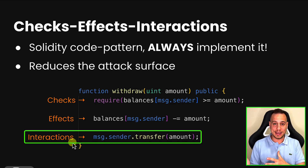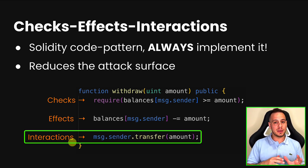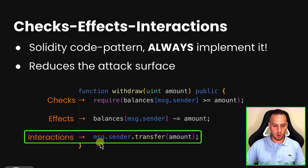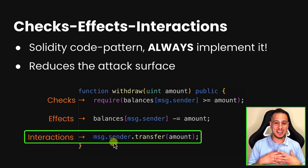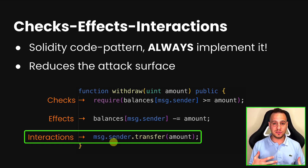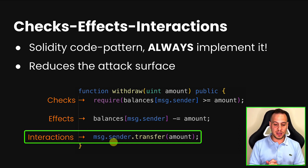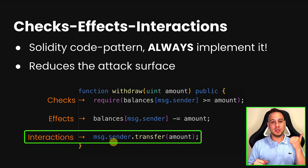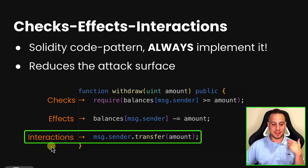Only after we do the checks and then the effects do we perform interactions. Interactions means interacting with external accounts — external smart contracts or EOA accounts — either by sending ETH or making external calls. Here you can see msg.sender.transfer is an external call because we are transferring Ether to the message sender, but we do it only after we've done the checks and the effects.